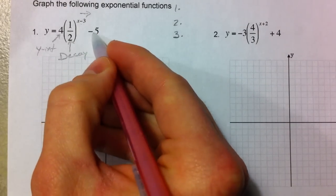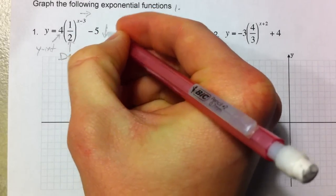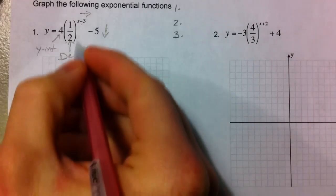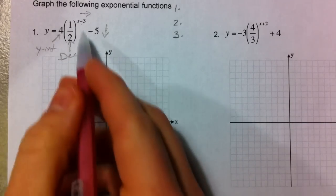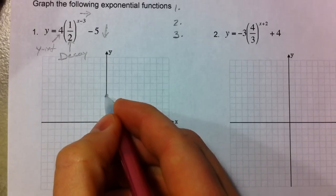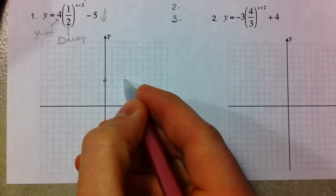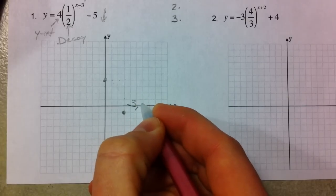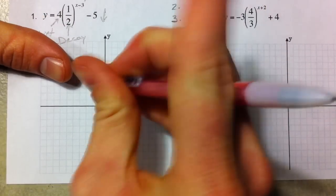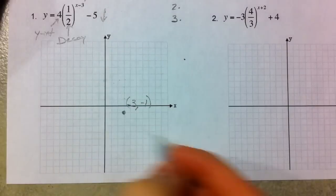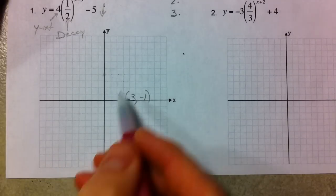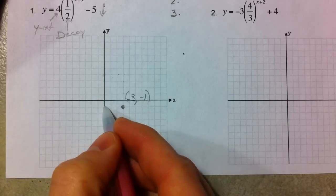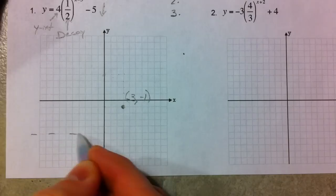The 'minus five' outside is not affecting the x, so it affects the y exactly how we think — it's moving it down five. So the graph, which is decay, shifts to the right three and down five. The starting point moves right three and down five, landing at the point three comma negative one. The horizontal asymptote was at zero, now shifts down five to y equals negative five.